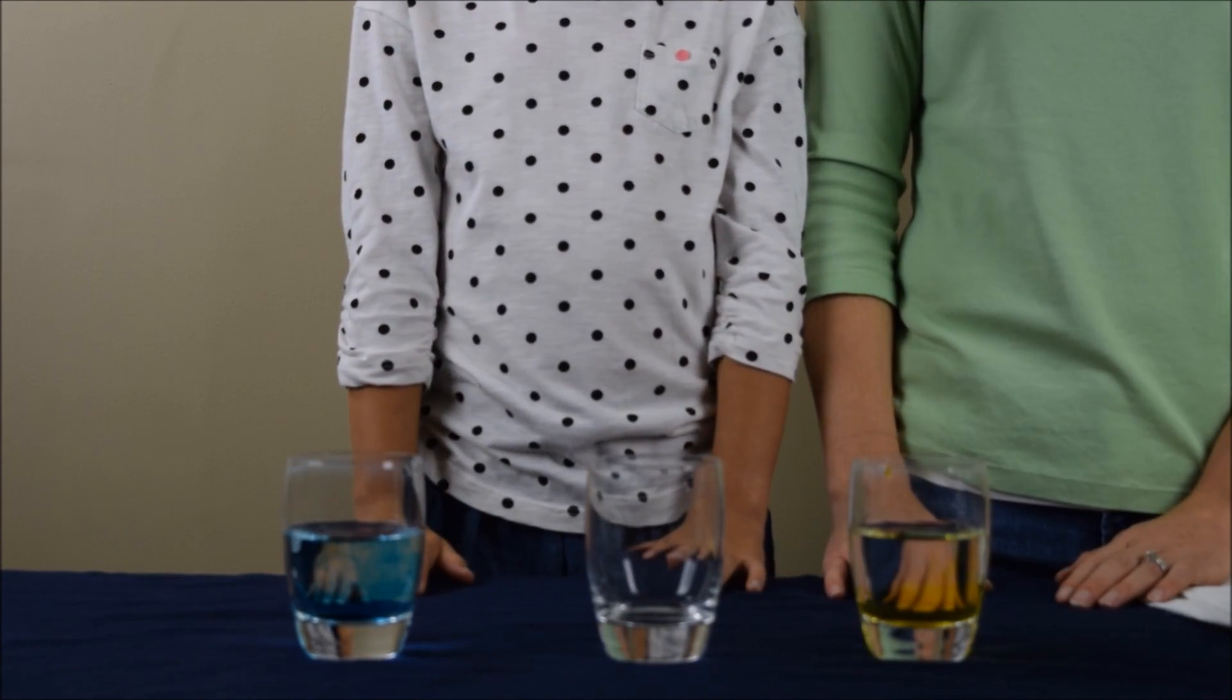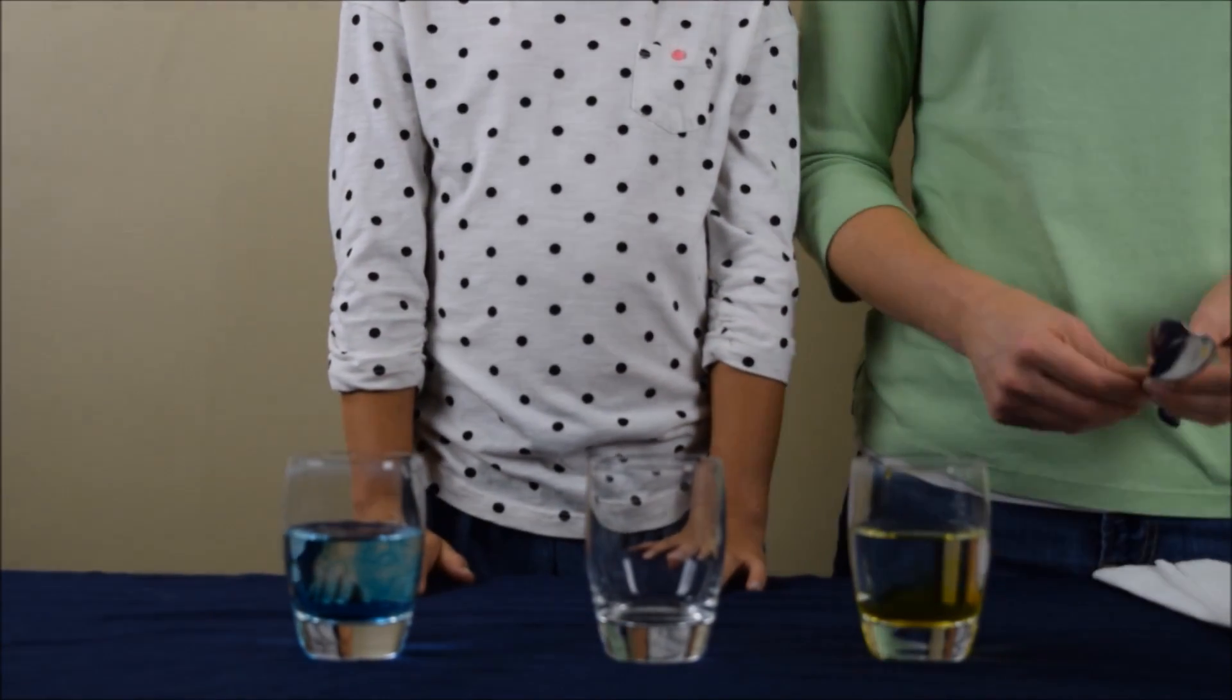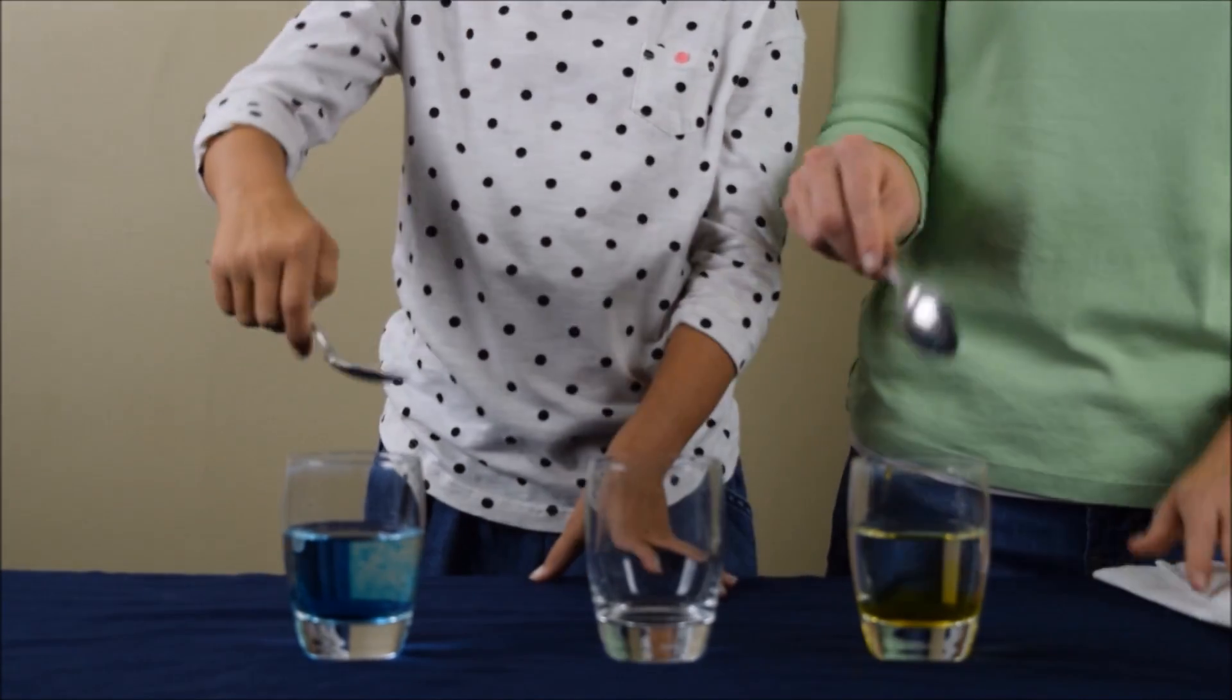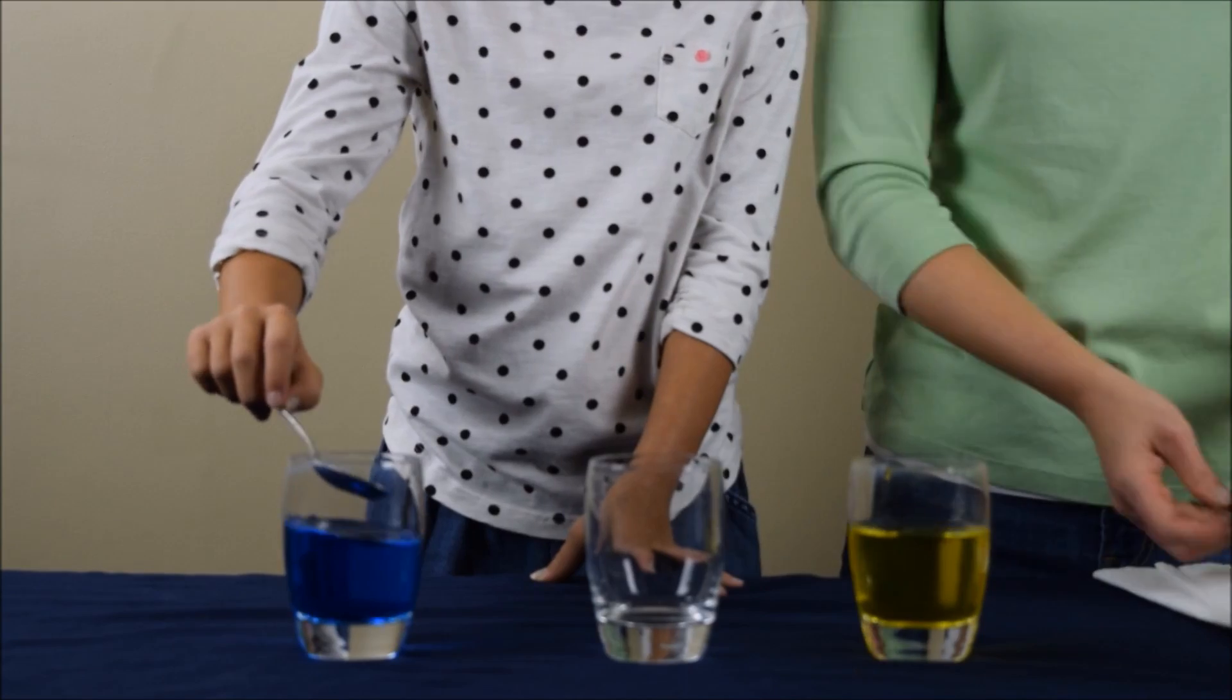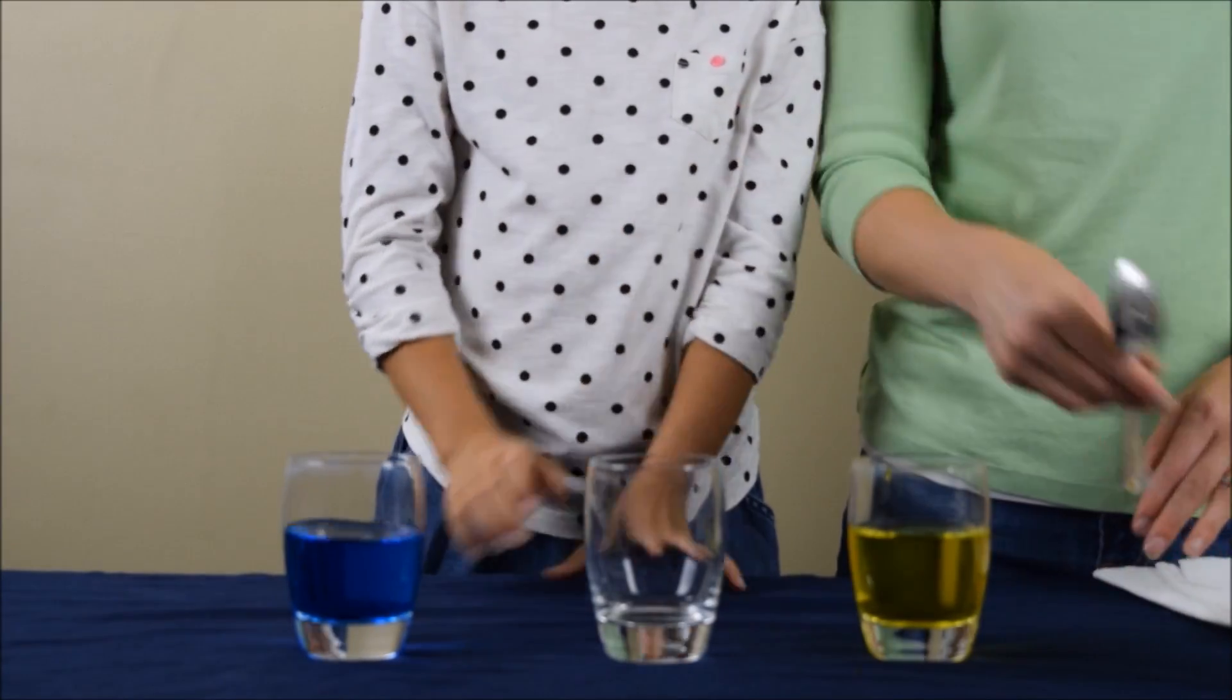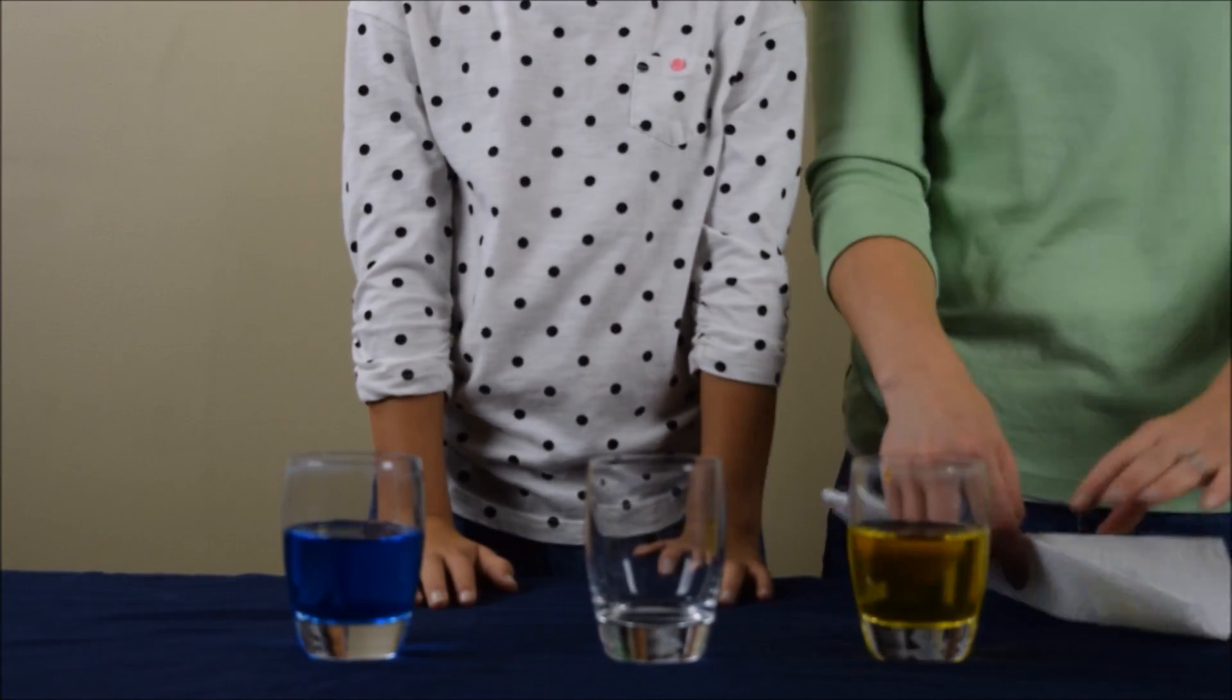So now that we have the food coloring in, we are going to mix the water so the food coloring is completely blended in with the water. It's completely mixed. We are going to go back to our paper towel.